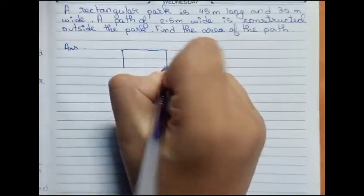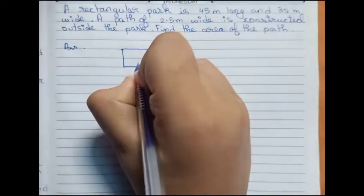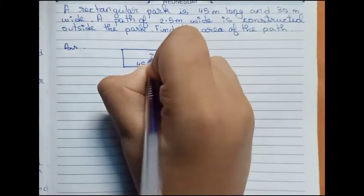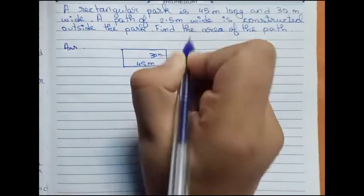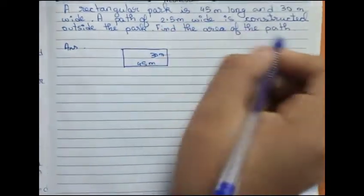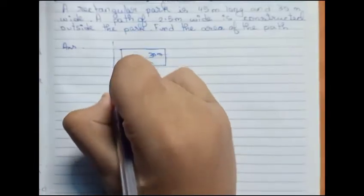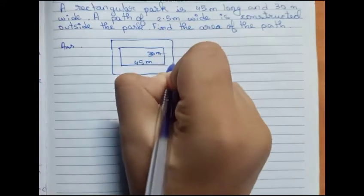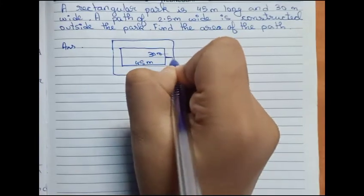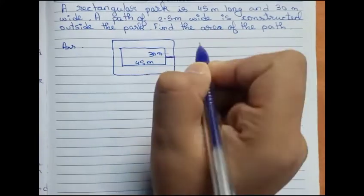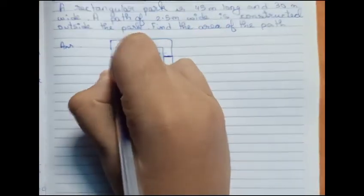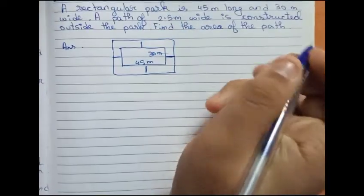The park is 45 meters long, so this side is 45 meters, and the breadth is 30 meters. Now the path is 2.5 meters wide — this is our path. This portion is 2.5 meters on this side, this side, and every side — every side is 2.5 meters wide.